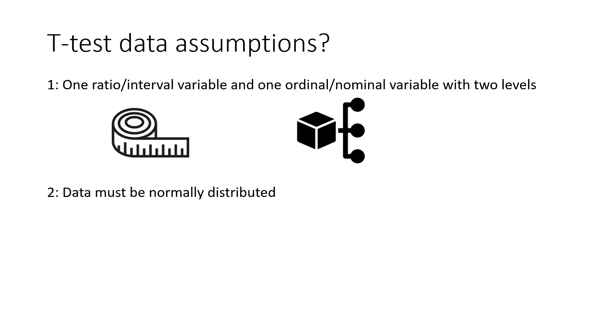Rule 2. The data must be normally distributed. That means if we make a confidence interval for it, it should look like this.